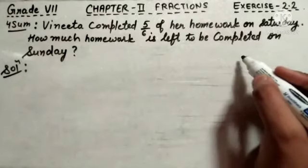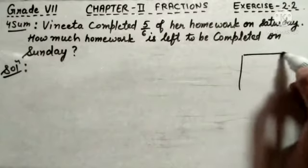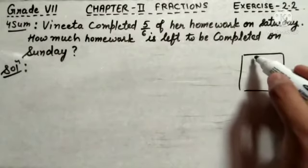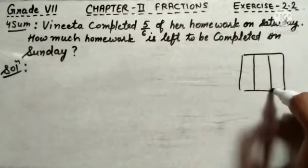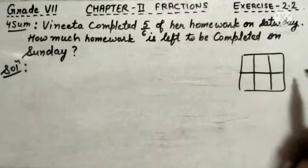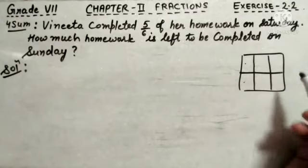That means, if work is divided into 6 equal parts. Suppose this homework is given to the child and this homework is divided into 6 equal parts: 1, 2, 3, 4, 5 and 6.